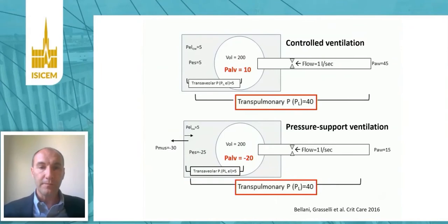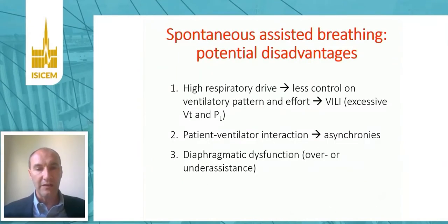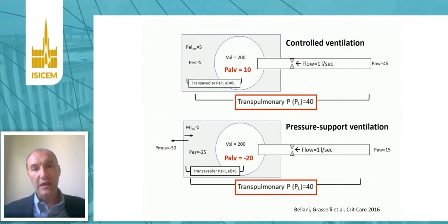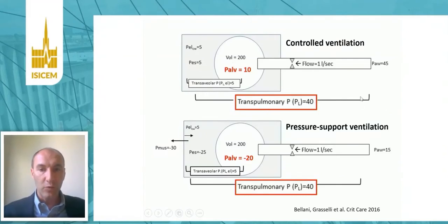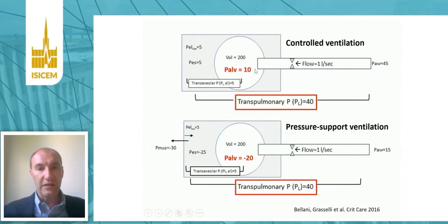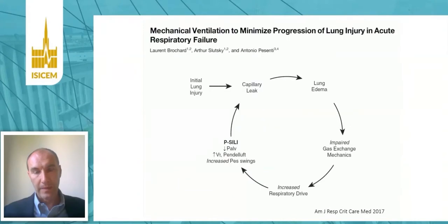The first problem is high respiratory drive and less control of the ventilatory pattern and effort. As you can see in this slide, under controlled mechanical ventilation and in pressure support ventilation, the transpulmonary pressure can be exactly the same. But the absolute value of alveolar pressure can be extremely different and very negative during pressure support ventilation, while it is always positive during controlled mechanical ventilation. This situation can be extremely dangerous, leading to what is called the vicious circle of patient self-inflicted lung injury.